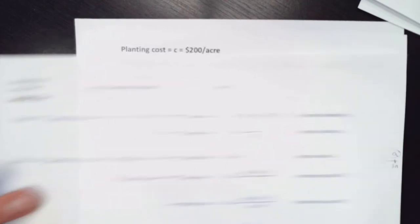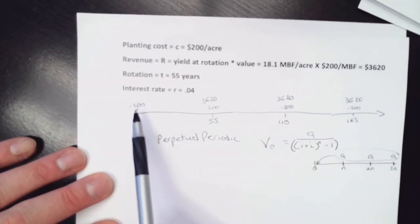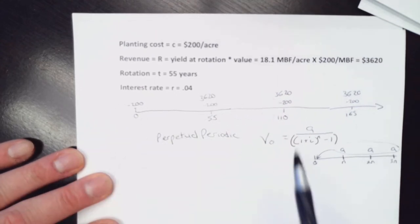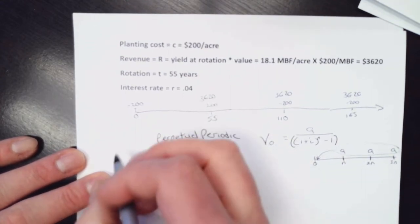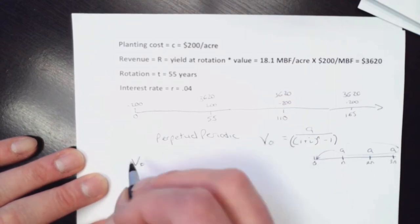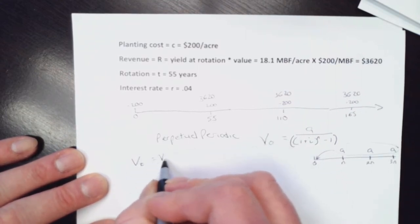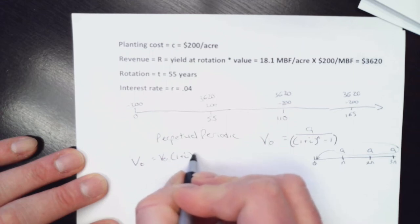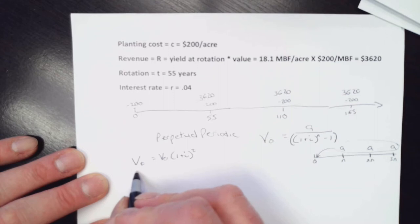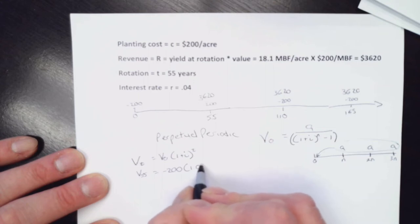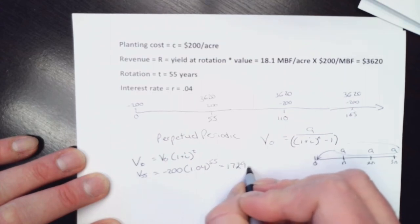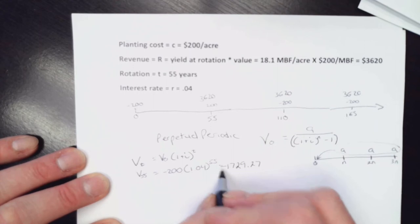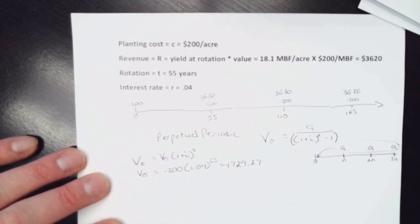that would be looking at an equation, a single value, moving a payment at one time out to the future. So that's going to be simple compounding, right? Simple compounding takes a single number and moves it to the right on our timeline. Simple discounting starts it out there and moves it in. And so we want to compound that. We want to figure out the V55 of some V0 times 1 plus i to the t. And so we can plug it in there. Our V55 for this thing is going to be minus $200 times 1.04 to the 55, which equals $1,729.27 minus, right? It's a cost.